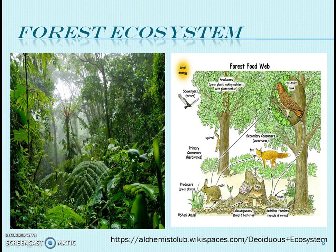Forest ecosystem: These are ecosystems having a predominance of trees, interspersed with a large number of species of herbs, shrubs, algae, animals, birds, etc. Forests occupy roughly 40% of land, and if we consider India, forests occupy roughly one-tenth of the total land area.